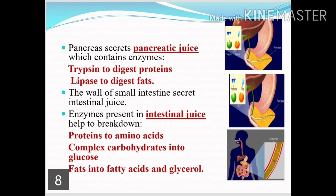The pancreas, which is an associated gland, secretes pancreatic juice. Pancreatic juice contains enzymes: trypsin enzyme acts on proteins, and lipase enzyme acts on fats. These enzymes break down proteins into amino acids, complex carbohydrates into glucose, and fats into fatty acids and glycerol.